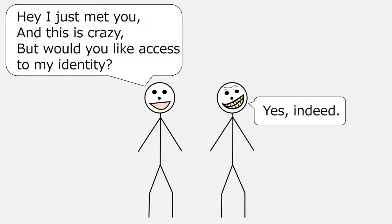In the real world, most of us wouldn't share the same kinds of private information with distant associates that we would share with our closest friends. But social media do not automatically make distinctions between close friends and non-close friends. To social media, a friend is a friend, and its default settings will allow all of your friends equal access to all of the private information that you share. Furthermore, because social media sites use words like 'friend,' sometimes users feel like they're being unfriendly if they don't accept friend requests.